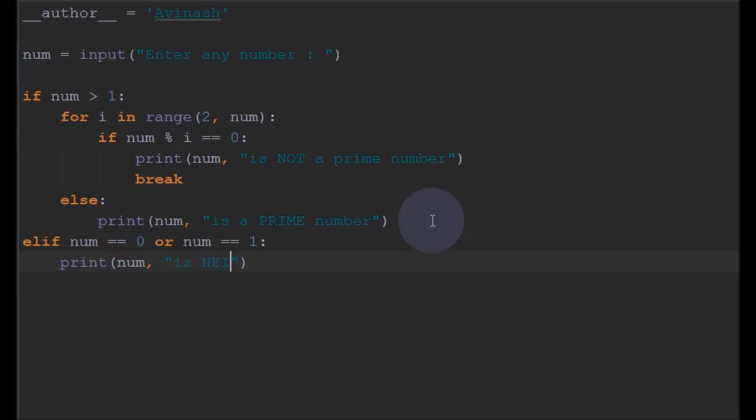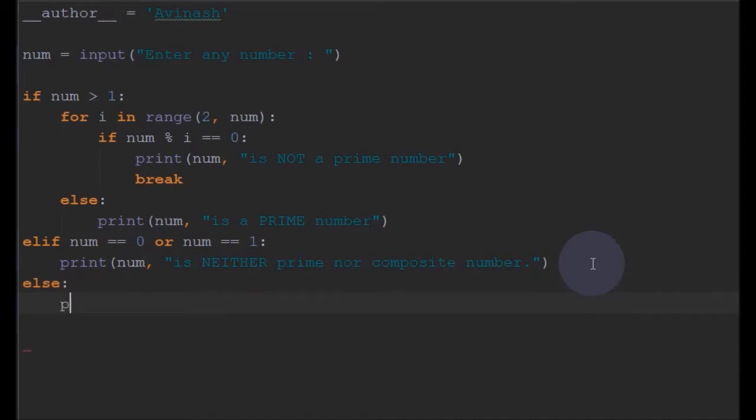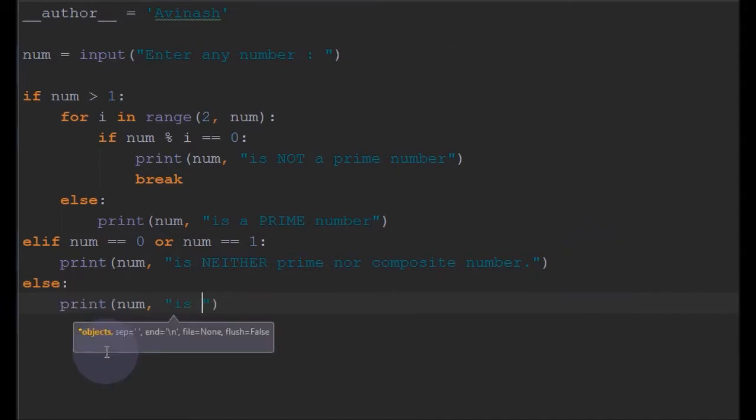number'. Finally, the else will just print 'the number is a prime number'.